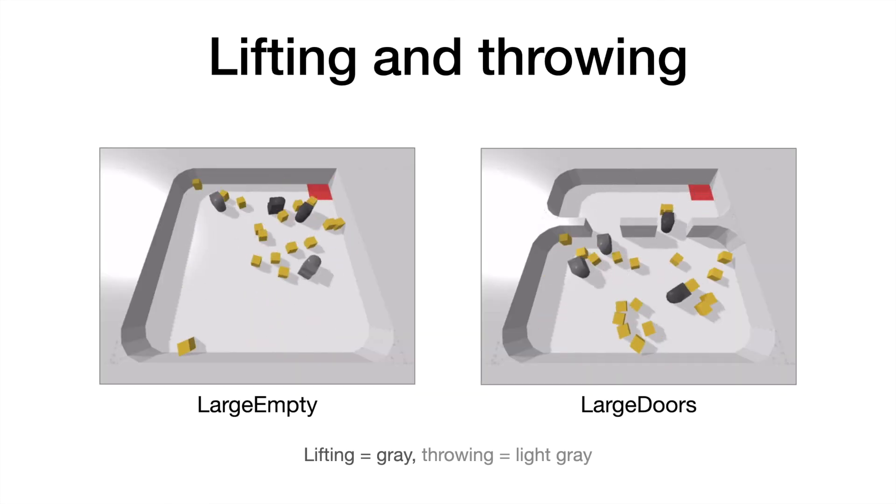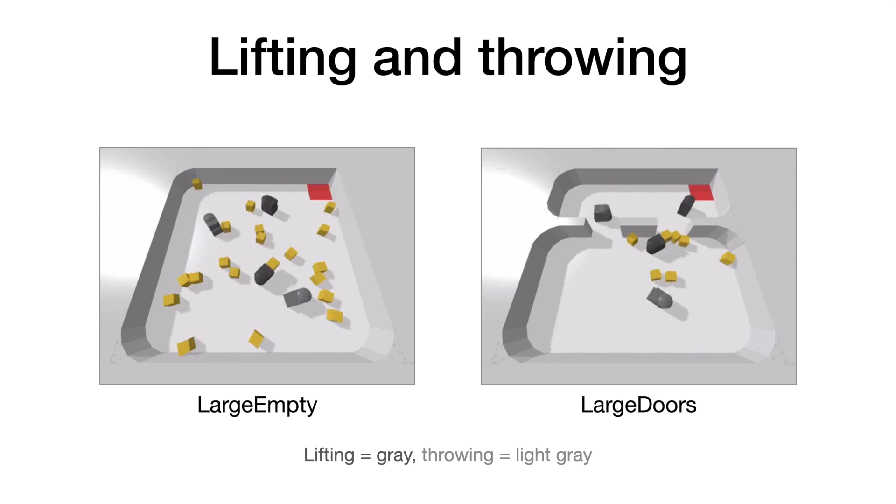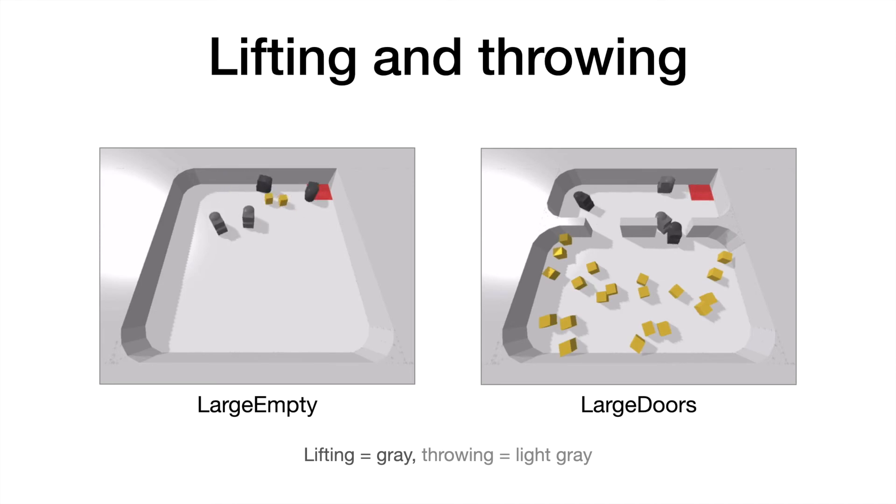We also combine lifting robots with throwing robots, which can throw objects backwards. When we trained this combination, we saw another interesting division of labor emerge. Since throwing robots are very effective at throwing objects a long distance, they learn to focus on the far away objects. In contrast, the lifting robots learn to focus on objects close to the receptacle, since the far away objects will eventually get thrown to them by the throwing robots.